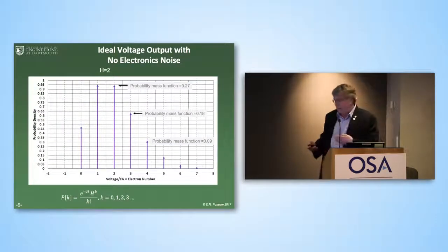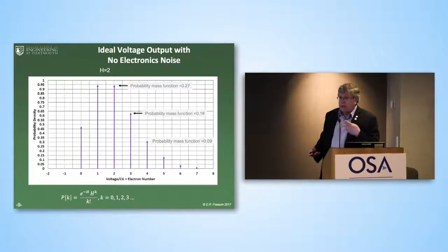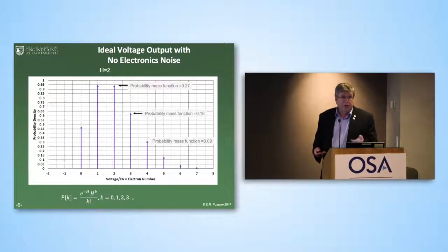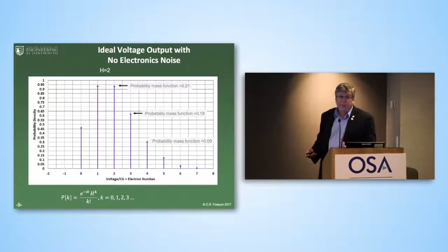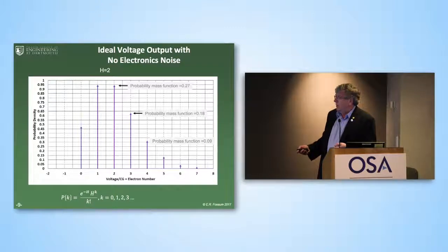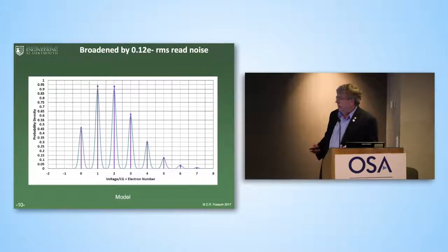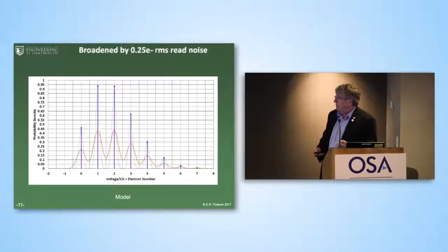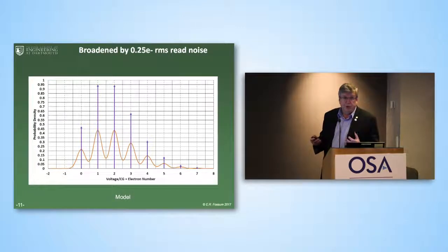To prepare you for the data coming up: if you take an electronic device, shine photons on it, take many frames over time, and do a voltage histogram — pretending there's no noise — you either get zero, one, two, three, or four electrons. The probability of each depends on the average flux rate. If you have a quanta exposure of two, meaning on average two photons, most of the time you get one or two. If you then add read noise, these sharp peaks broaden: at 0.12 electrons rms read noise they're slightly broadened, at 0.25 electrons rms you can see we're starting to lose the discrete nature.